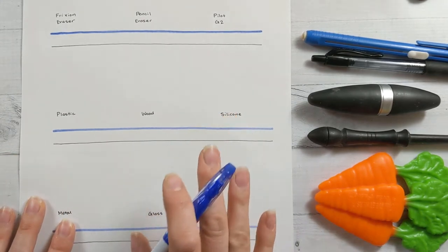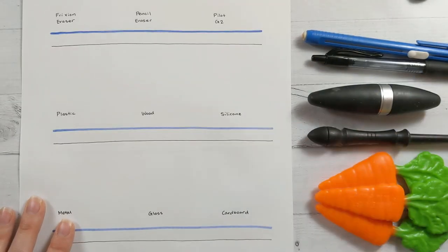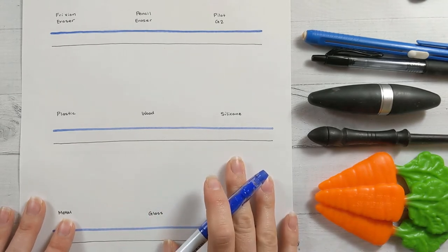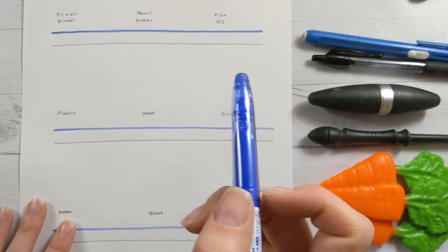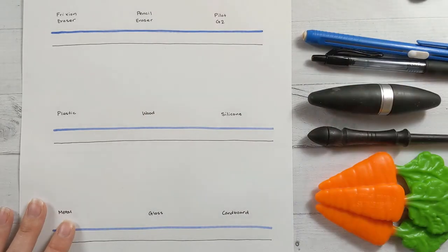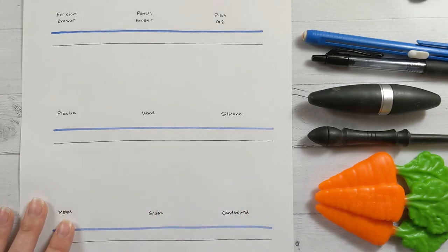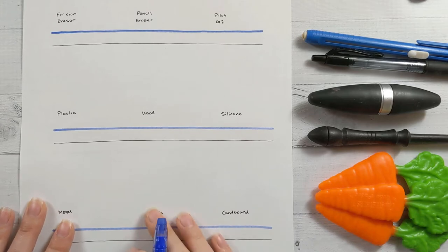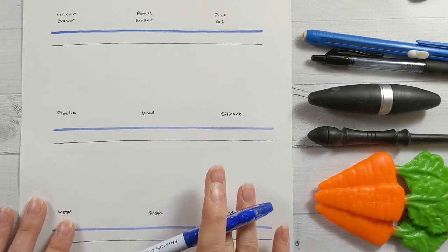Today the question is: you lose your friction eraser, now what? Or say you're out and about, you're in a pinch, you didn't bring your friction with you but you need to fix or change something. What else could you use instead of a friction eraser? Today I'm going to be testing a whole bunch of different kinds of materials.